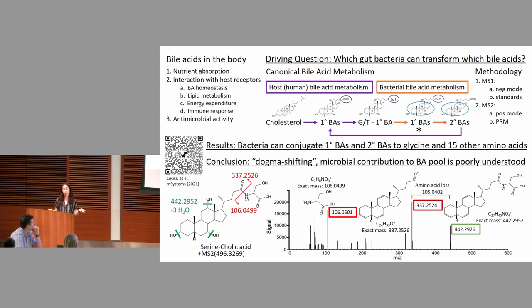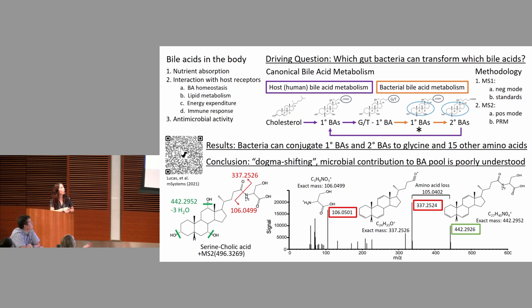We performed fragmentation PRM on these molecules at the predicted masses and generated spectra. The retention times matched between negative mode and positive mode. Here is an example spectra we identified to confirm our metabolite of interest: serine conjugated to cholic acid. When you fragment these molecules, we lose the hydroxyl groups on the steroid core as well as the amino acid conjugate, and we get peaks at exactly those expected masses — one for the amino acid, one for the ammonium ion, and one with the amino acid conjugated.